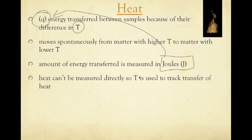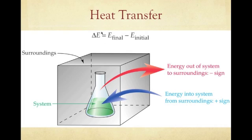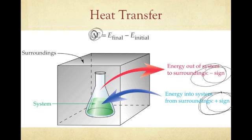Heat can't be measured directly, so we measure temperature instead. Temperature is used to track the transfer of heat. The delta symbol means 'change in,' so the change in energy is final minus initial. Energy flowing into a system is always positive, and energy flowing out of a system is always negative.